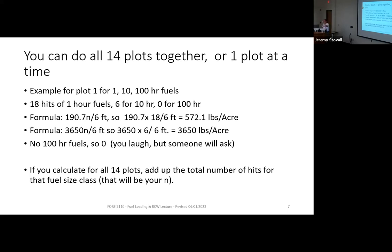You'll calculate for the whole area and divide. For example, using the formula: 190.7 times 18, divided by 6, gives you 572.1 pounds per acre. Eventually you'll have to convert pounds to tons, but I'm confident you can handle that.